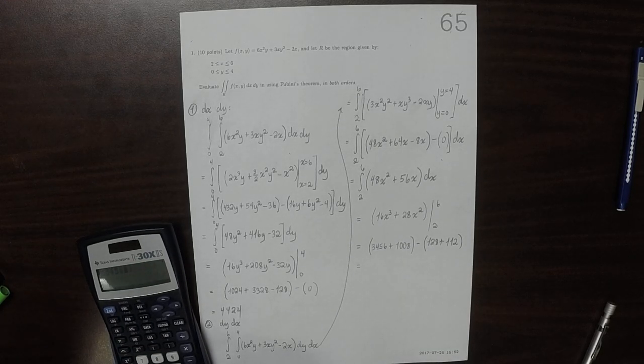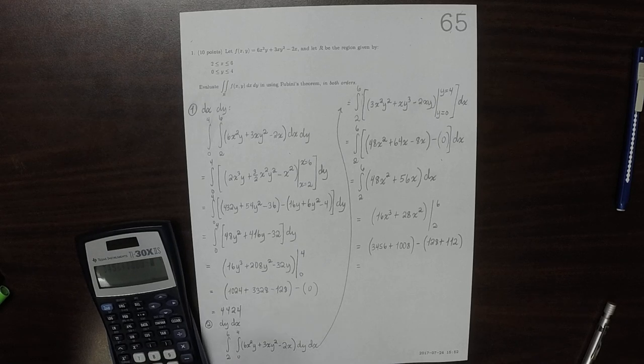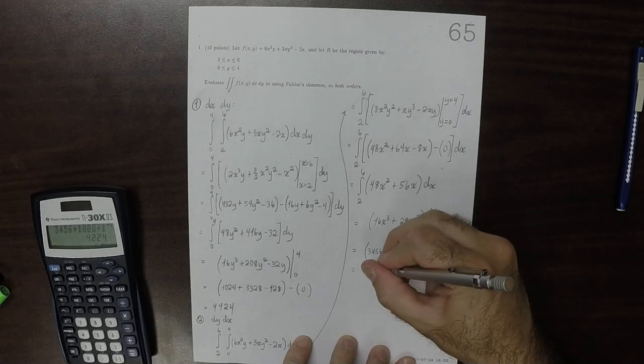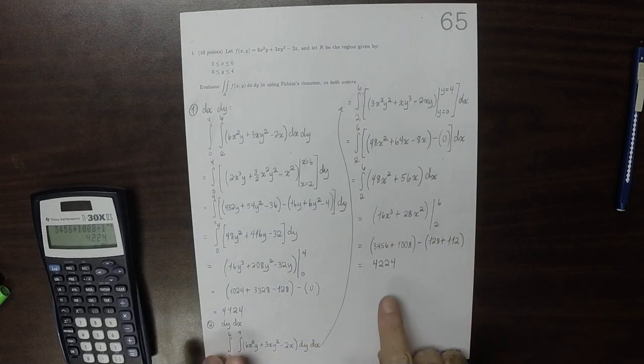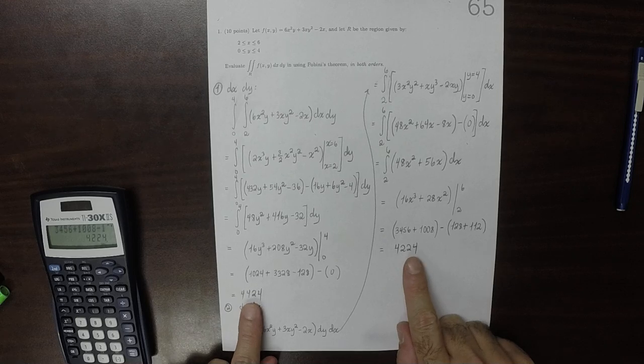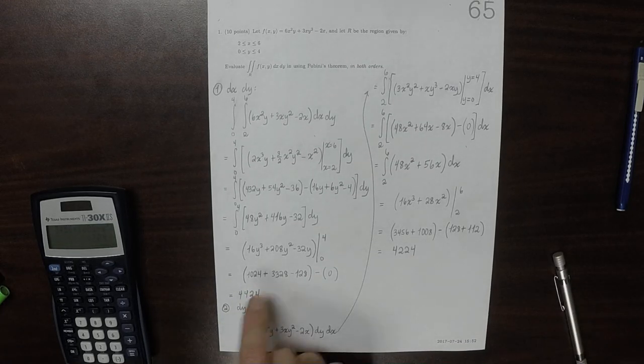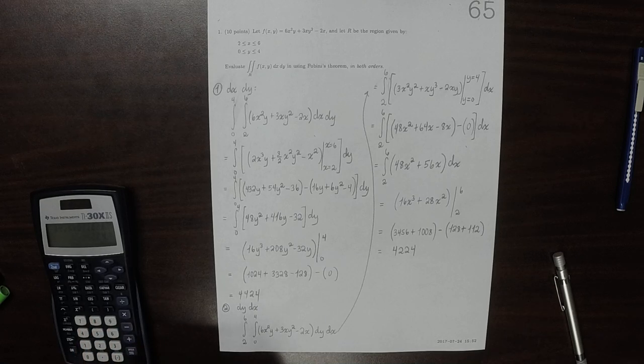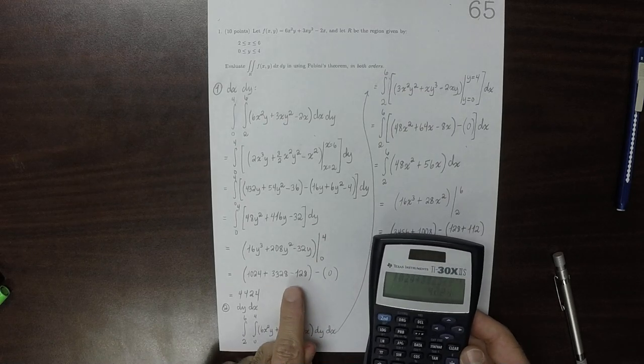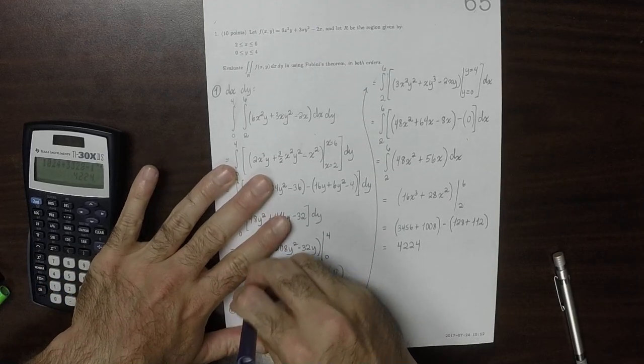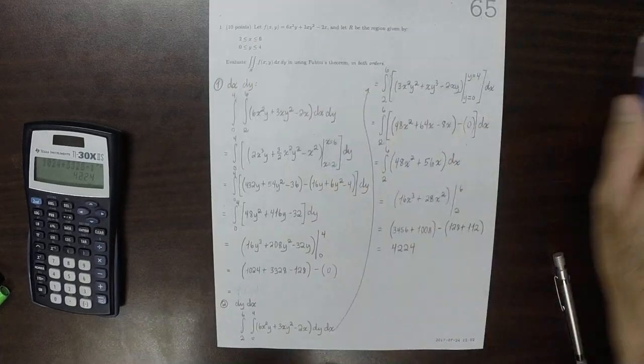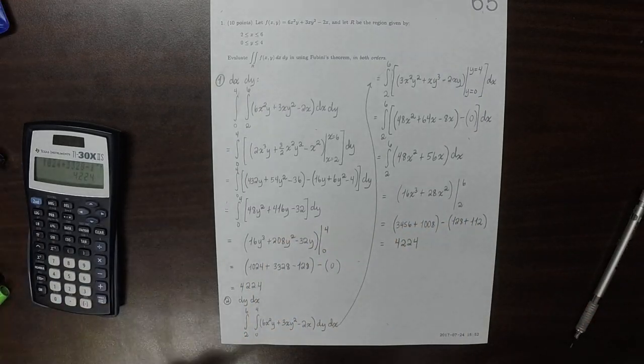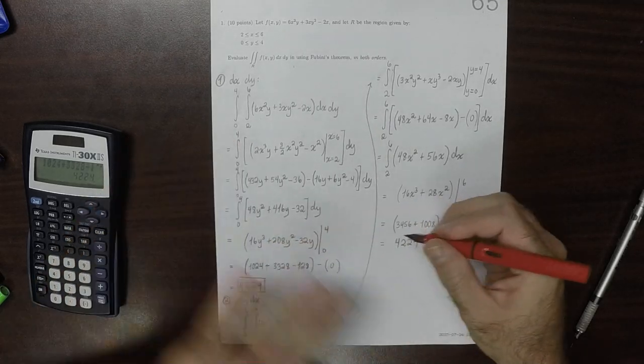What? Wait a second. I need to double check my answer because somehow I got something wrong there. Let's double check this. Maybe I typed that in wrong. 1024 plus 3328 minus 128. Ah, so when I typed this in the first time I either typed it wrong or read it wrong. This needs to be 4224. 4224. So these answers are the same.